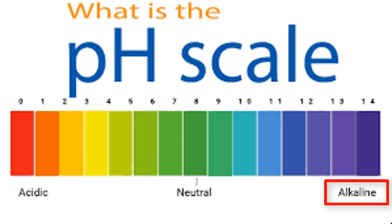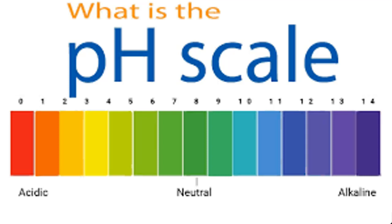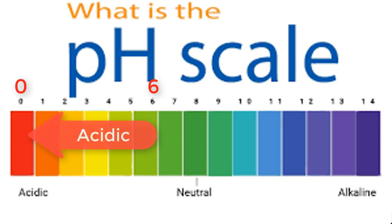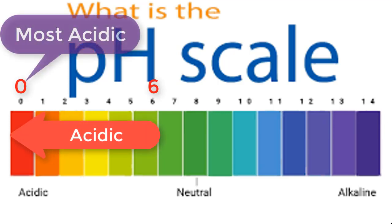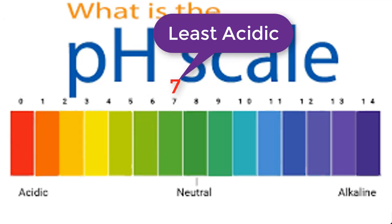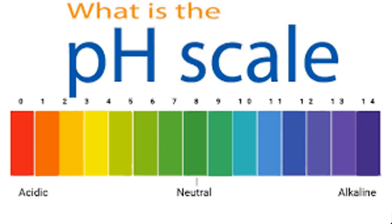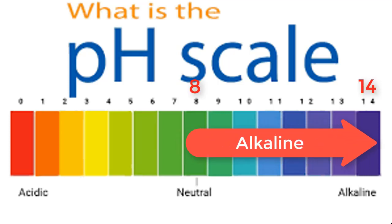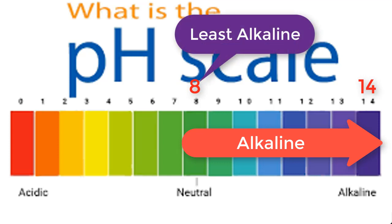pH is usually represented on a number scale starting from 0 to 14. Solutions that have a pH between 0 and 6 are said to be acidic, with 0 as most acidic and 6 as least acidic. Solutions with pH 7 are said to be neutral — a very good example is water. Solutions with pH between 8 and 14 are said to be alkaline, with 8 as least alkaline and 14 as most alkaline.